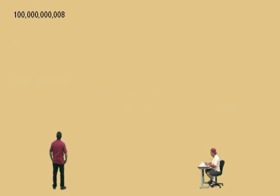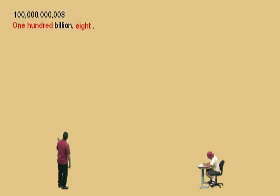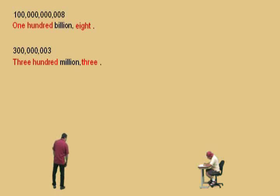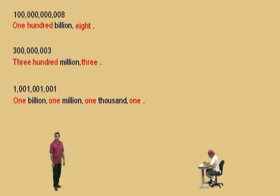Let's try another tough one. Professor Perez helps out: this is one hundred billion. Notice there are no millions and no thousands — all we have is an eight. So this number is one hundred billion, eight. Here's another one: one billion, one million, one thousand and one. Very nice, Charlie — one billion, one million, one thousand and one.